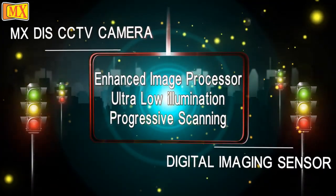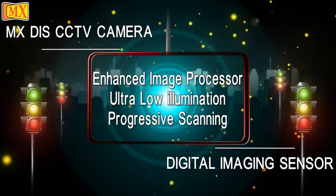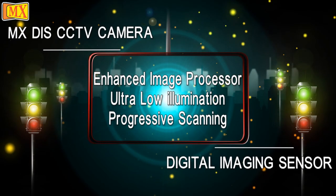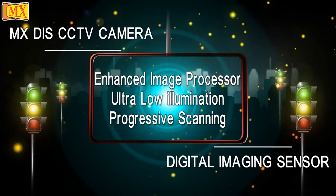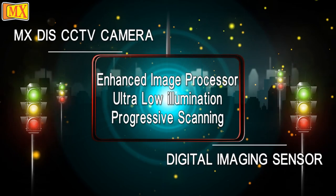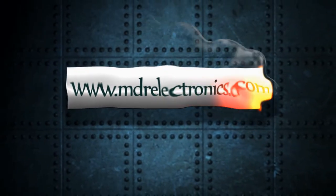DIS stands for Digital Imaging Sensor. These cameras have an enhanced image processor, ultra low illumination, and progressive scanning.